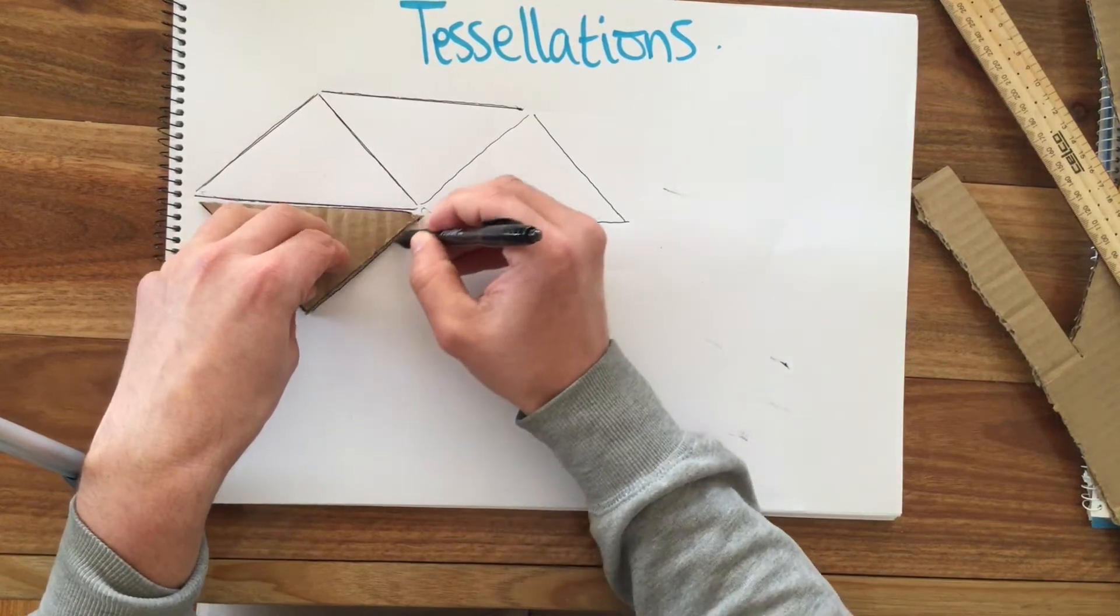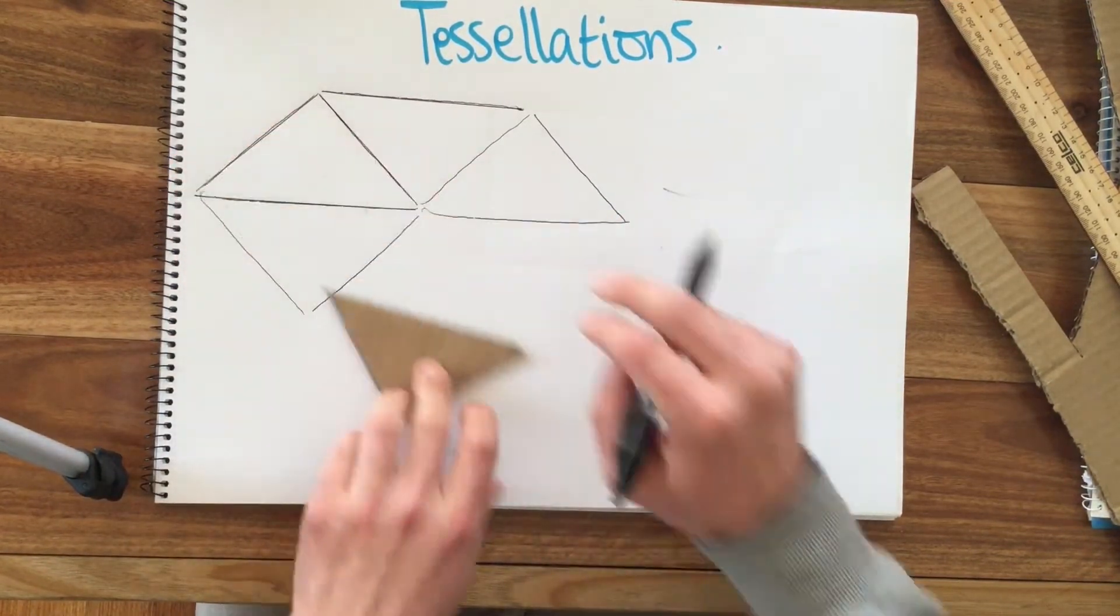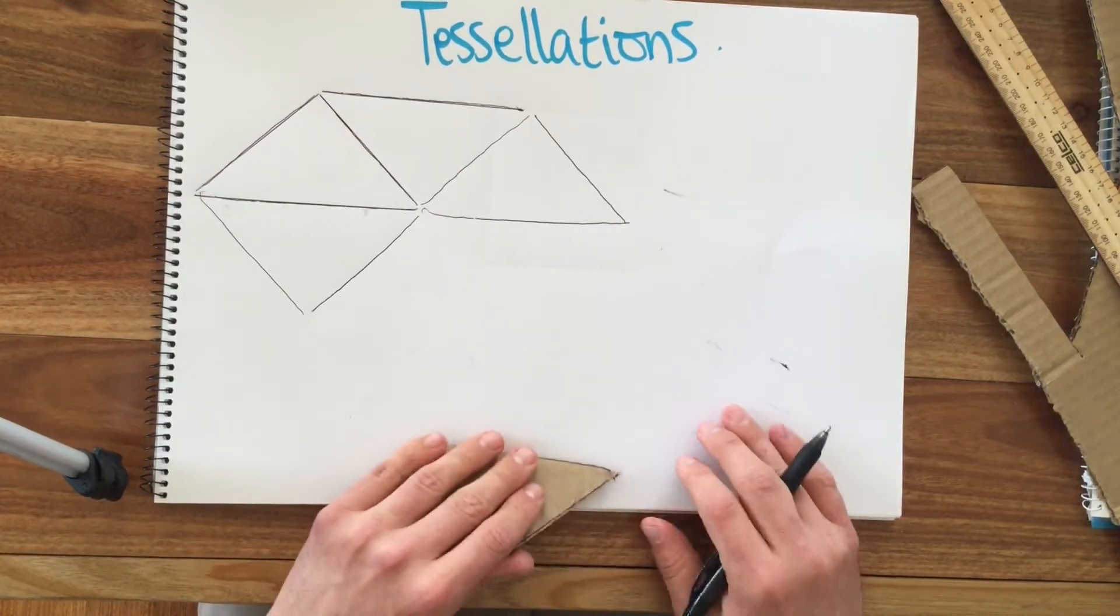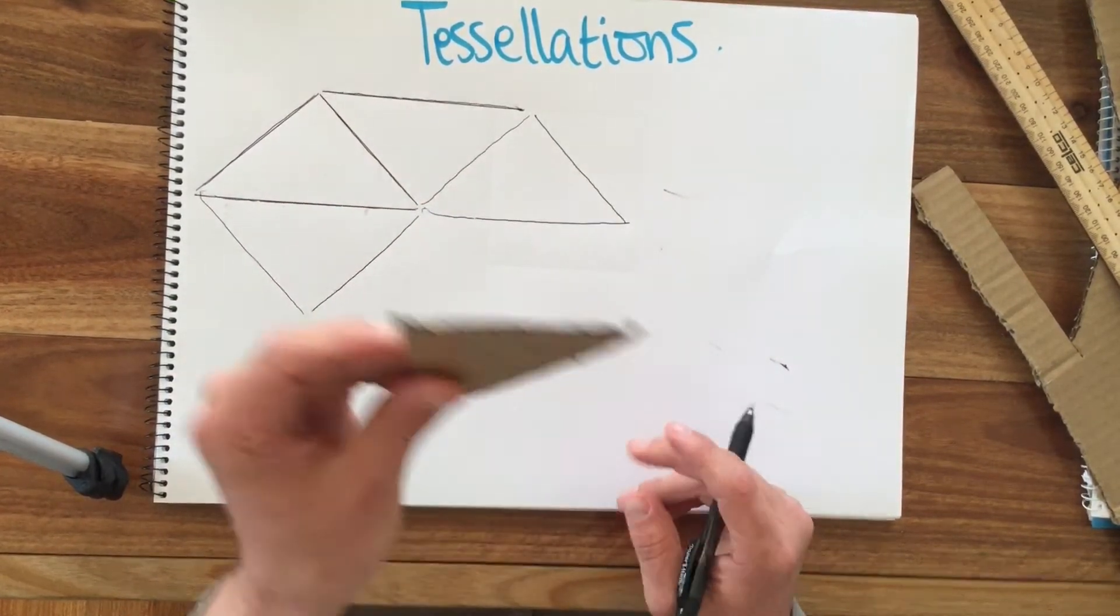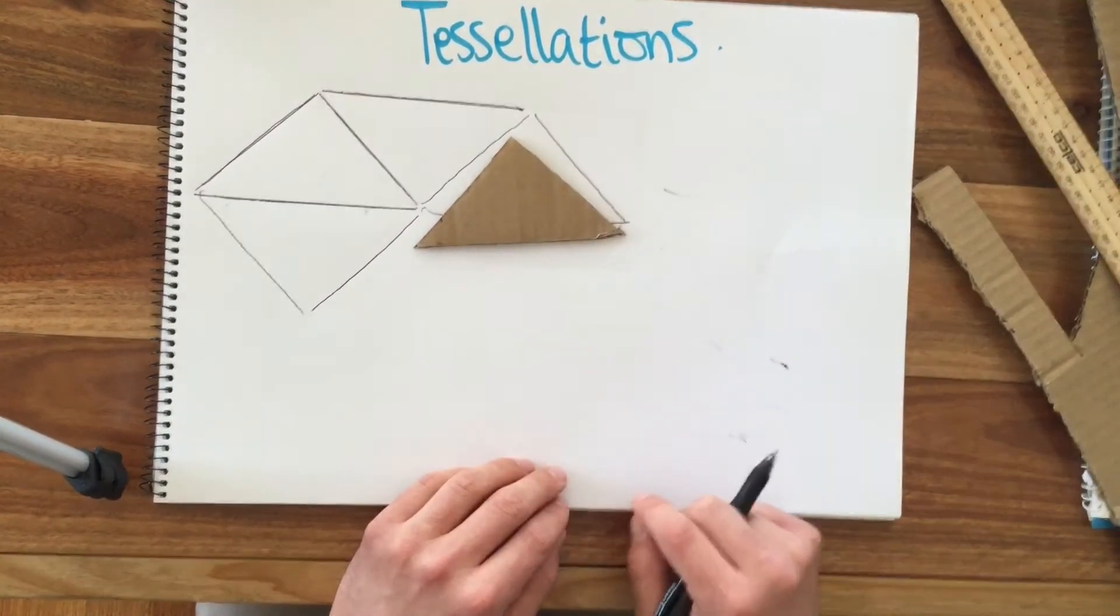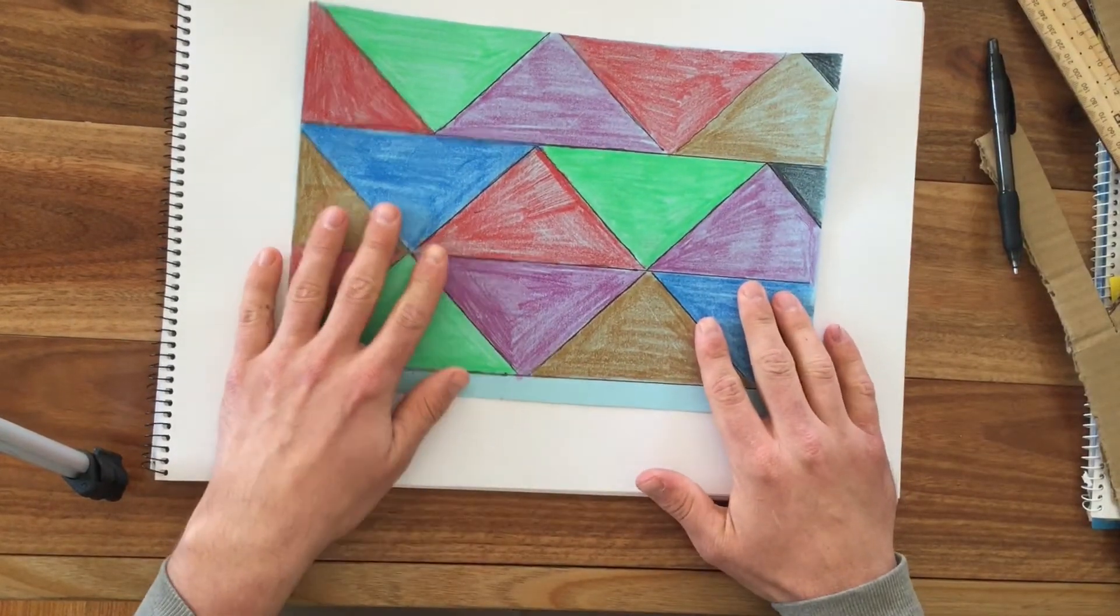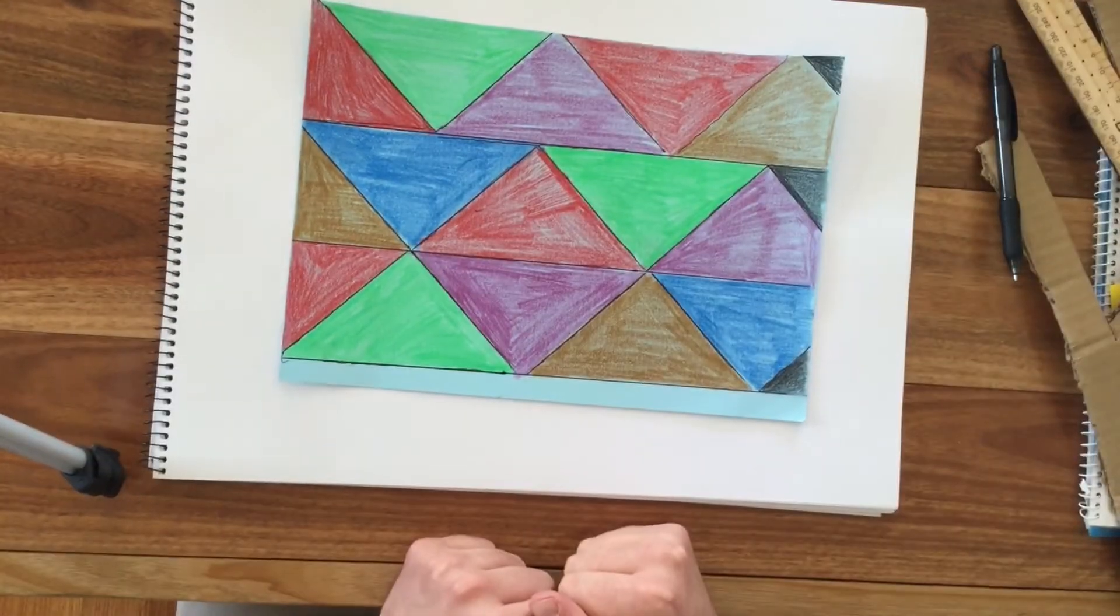Now I'm using only one shape for this - this is the regular tessellation. Here is my finished product using my triangle.